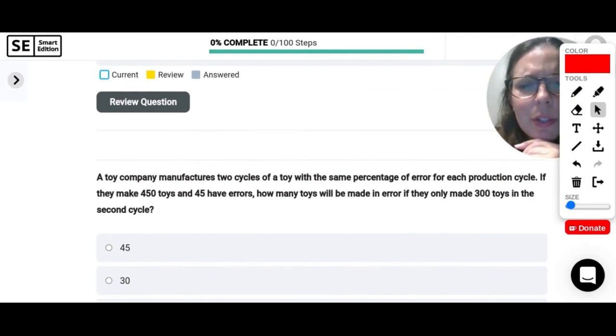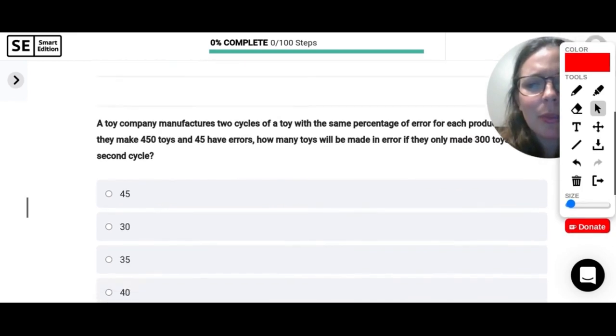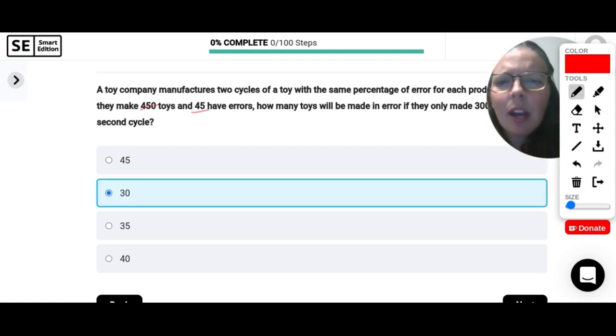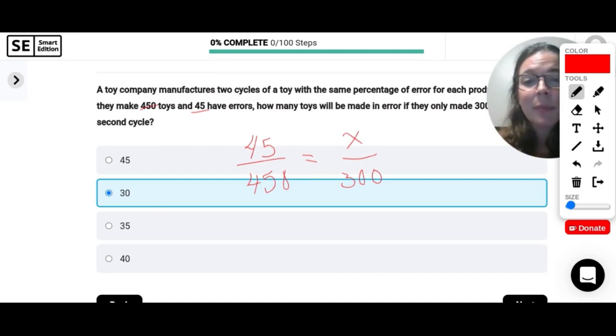A toy company manufactures two cycles of a toy with the same percentage of error for each production cycle. If they make 450 toys and 45 have errors, how many toys will be made in error if they only made 300 toys in the second cycle? So I see kind of a fairly obvious pattern here. These numbers are kind of nice. Looks like 10% of them have errors. So I can see kind of right away that that's 30. But if you did not see that, you could also just set up a proportion. 45 out of the 450 had errors. And that's going to be equal to how many out of the 300. And then you could cross multiply and solve. So if you want to give that a try, pause the video and why don't you leave us a comment and let us know if you got the same thing.